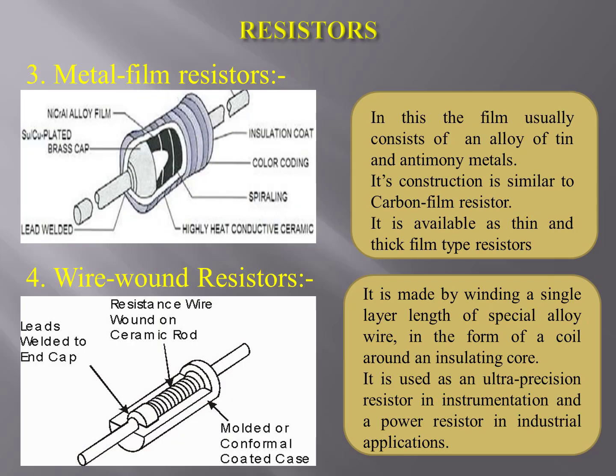Metal film resistors: the film usually consists of an alloy of tin and antimony metals. Its construction is similar to carbon film resistors, and it is available as thin as well as thick film type resistors.